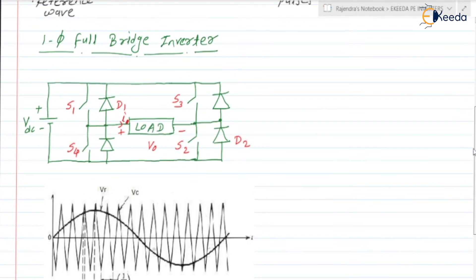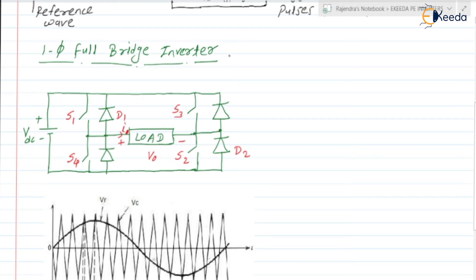Suppose we are having a single phase full bridge inverter. The circuit diagram has input VDC and we are using four switches S1, S2, S3, S4. Across each switch, a diode is connected in anti-parallel. Here we are having the load — suppose the load is resistive, for simplicity.